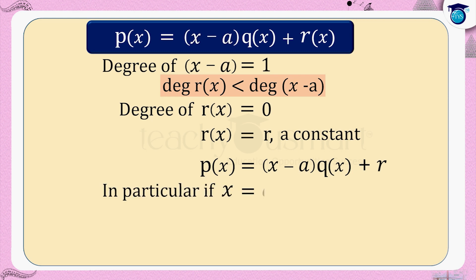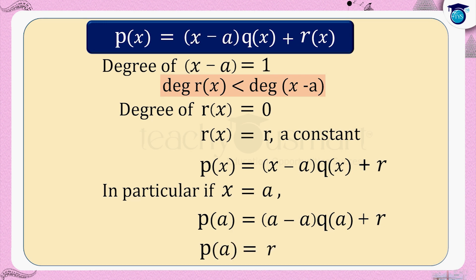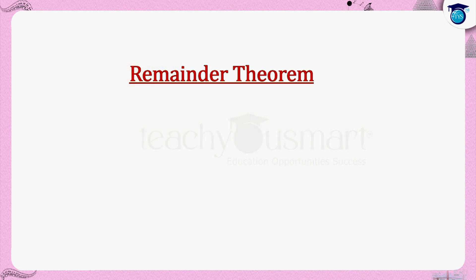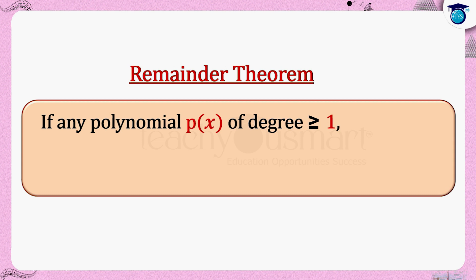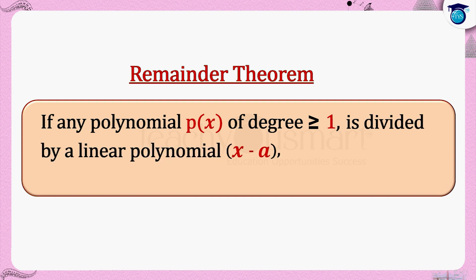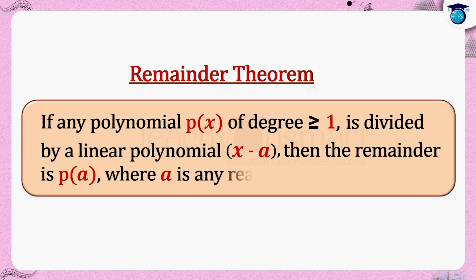In particular, if we put x equals a, we get p of a equals a minus a multiplied by q of a plus r. That is p of a equals r. Hence, if a polynomial p of x of degree greater than or equal to one is divided by a linear polynomial x minus a, then the remainder is p of a, where a is any real number.